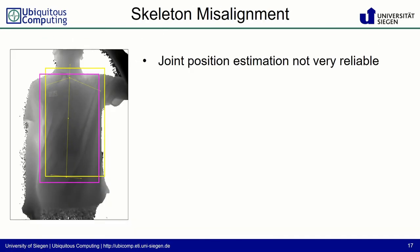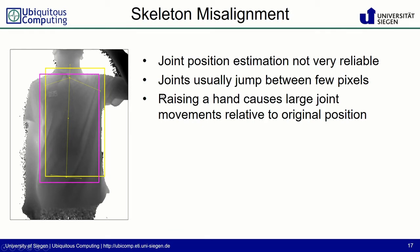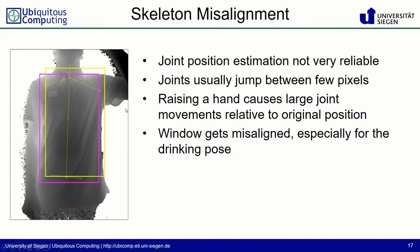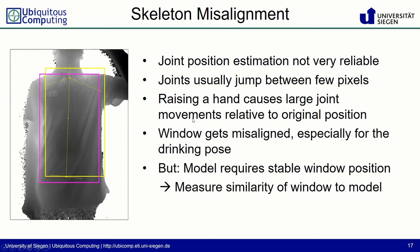The model requires a stable window position on the torso surface. However, the joint position estimation is not very reliable. Here in magenta we have the original window position used by the model, and the yellow window position comes from the new skeleton path from the joint positions. The joints usually jump between a few pixels, and raising a hand causes large joint movements relative to the original position, causing the window to get misaligned, especially for the drinking posture.